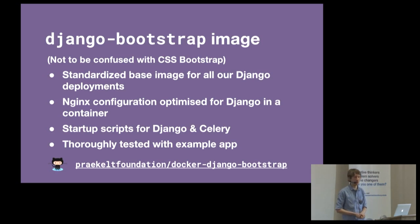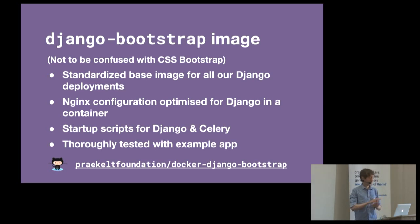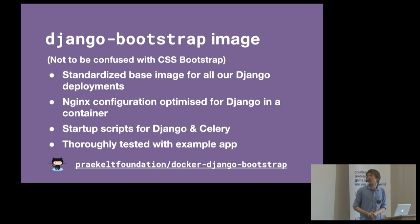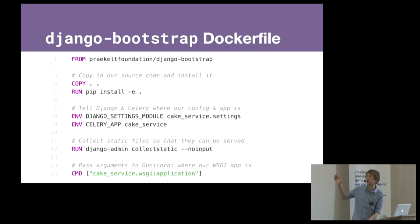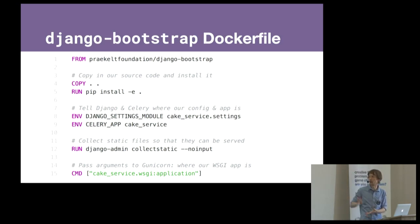We built a base image we call Django Bootstrap - it has nothing to do with CSS Bootstrap. It's basically the standardized Docker image we use for pretty much all our Django deployments. It has NGINX configuration optimized for Django specifically in a container. It has startup scripts for Django and Celery that do all the things I've described. We test it, which I think is pretty cool. Your Dockerfile might start with the Django Bootstrap image, copy in your source code and install it, define where the Django settings is and what the Celery app will be, run collectstatic so static files are ready to be served by NGINX, and then tell Gunicorn what your application is.